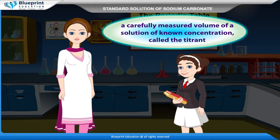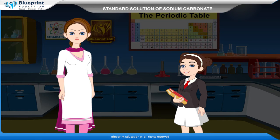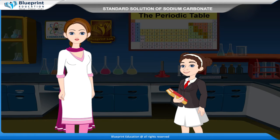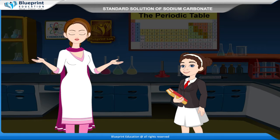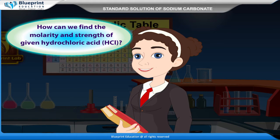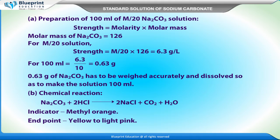a carefully measured volume of a solution of known concentration, called the titrant, is added to a measured volume of a solution containing a compound whose concentration is to be determined. How can we find the molarity and strength of given hydrochloric acid, HCl? A. Preparation of 100 ml of M by 20 Na2CO3 solution.